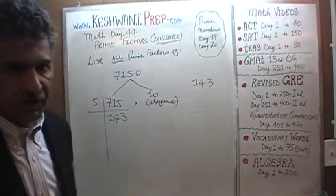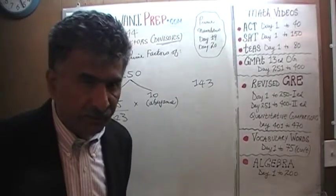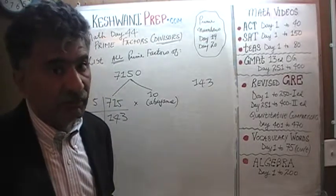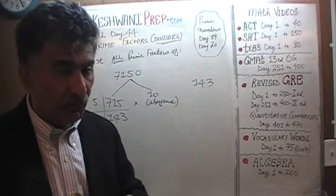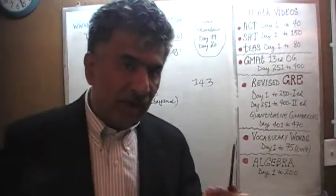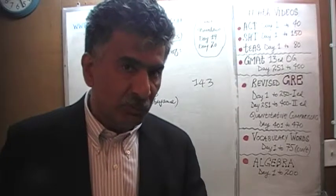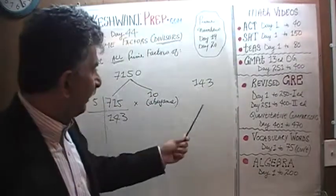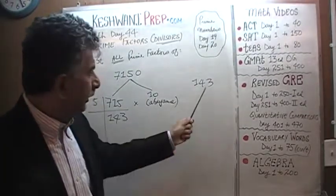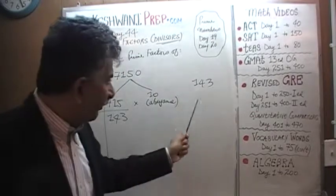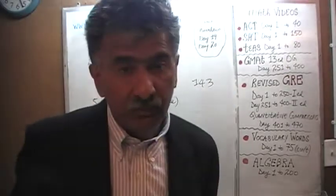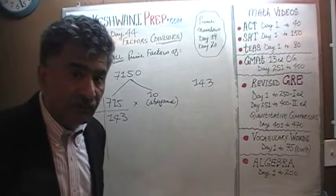What do we divide 143 by? We can't divide it by 2 — it's not an even number. 1 plus 4 plus 3 is 8, which is not divisible by 3, so we can't divide by 3. Is it divisible by 5? Clearly not, because it doesn't end in a 5 or a 0. After 5 comes 7. Is this number divisible by 7?